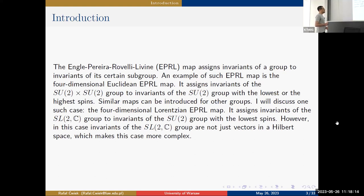Similar maps can be introduced for other groups. In this presentation, the focus is on the four-dimensional Lorentzian EPRL map, which assigns invariants of the SL(2,C) group to invariants of the SU(2) group. Here SU(2) is just a subgroup of SL(2,C), and we talk about invariants with the lowest spins. However, invariants of SL(2,C) are not just vectors in a Hilbert space, making this case more complex than the Euclidean case.